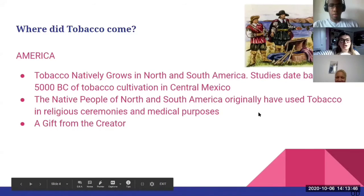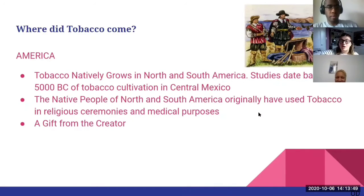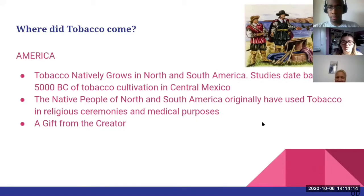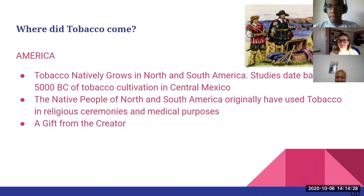So, where did tobacco come from? There is documentation for tobacco use that goes back over 8,000 years ago — around 5000 BC — with the development of maize-based agriculture in central Mexico. The origins of tobacco use, because it is natively grown in the Americas, that's where it comes from. The origin of tobacco use came from religious ceremonies and medical purposes. Certain tribes in eastern North America historically carried tobacco in pouches as accepted trade items — they would use it for currency.